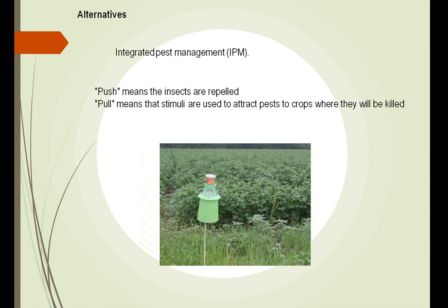Another approach is integrated pest management, which tries to use the least amount of insecticides and pesticides to control the various insects in a field. One method involves bringing insects to a certain area — for example, using a Japanese beetle trap with a pheromone inside. The Japanese beetles enter the trap and fall into a water trap or a bag and die.